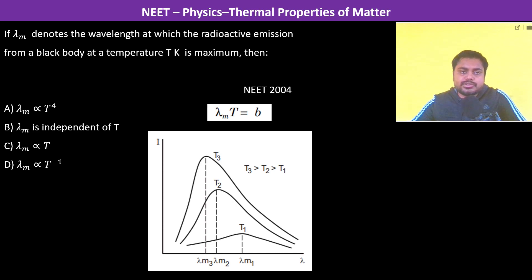Lambda m generates the wavelength at which the radioactive emission from a black body of a temperature T is maximum. This is Wien's displacement law.